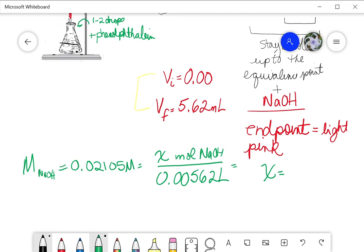So I can calculate the number of moles. Let's do that. So 0.02105 times 0.00562, and you should get 1.183 times 10 to the negative 4, and that's moles.